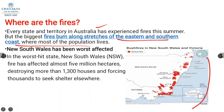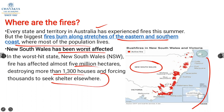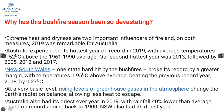Looking at the diagram, you can see the areas in Australia worst affected by bushfires. The south-eastern region, particularly New South Wales, is the worst-hit state. In NSW, fires affected almost 5 million hectares, destroying more than 1,300 houses and forcing many residents to seek shelter elsewhere.